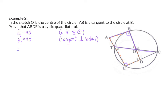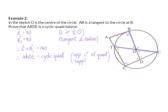Writing this down: angle E equals 90 degrees — reason: angle in a semicircle. Angle B1 equals 90 degrees — reason: tangent perpendicular to radius. Therefore angle E plus angle B1 equals 180 degrees, they are supplementary, and ABDE is a cyclic quadrilateral — reason: opposite interior angles of the quadrilateral are supplementary.